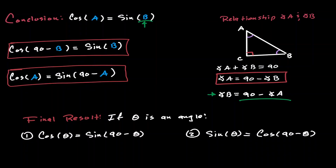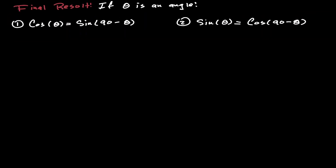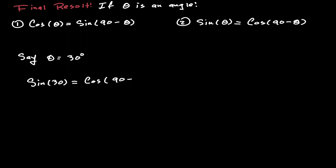Let's give some quick examples. If we are given the angle of 30 degrees, then the sine of 30 degrees is equal to the cosine of 90 minus 30 degrees. Simplifying further, the sine of 30 degrees is equal to the cosine of 60 degrees.